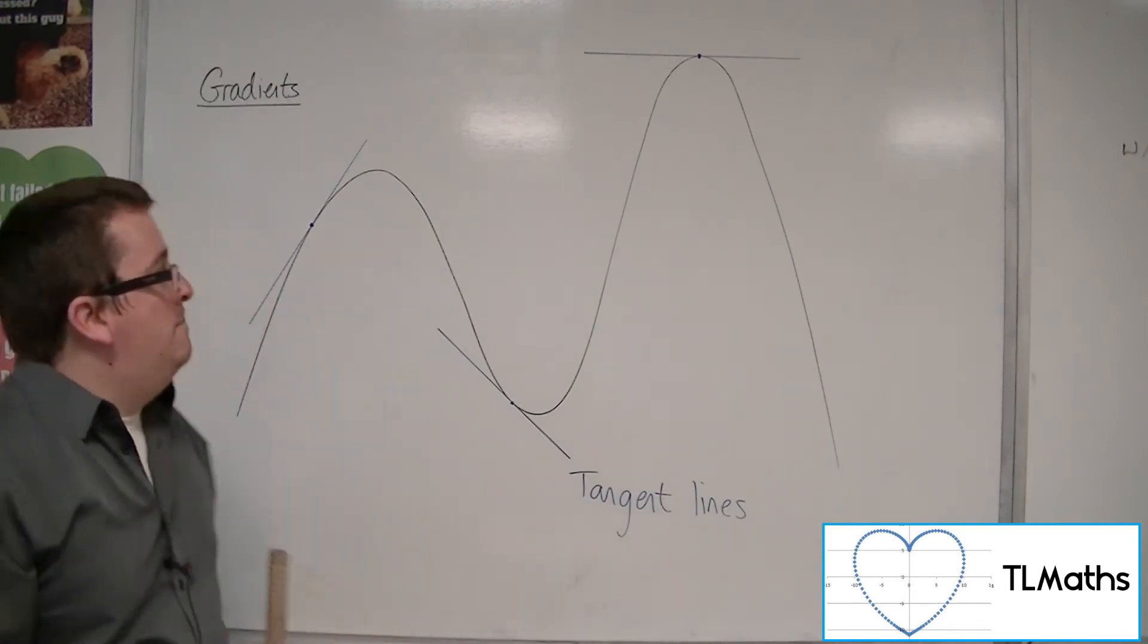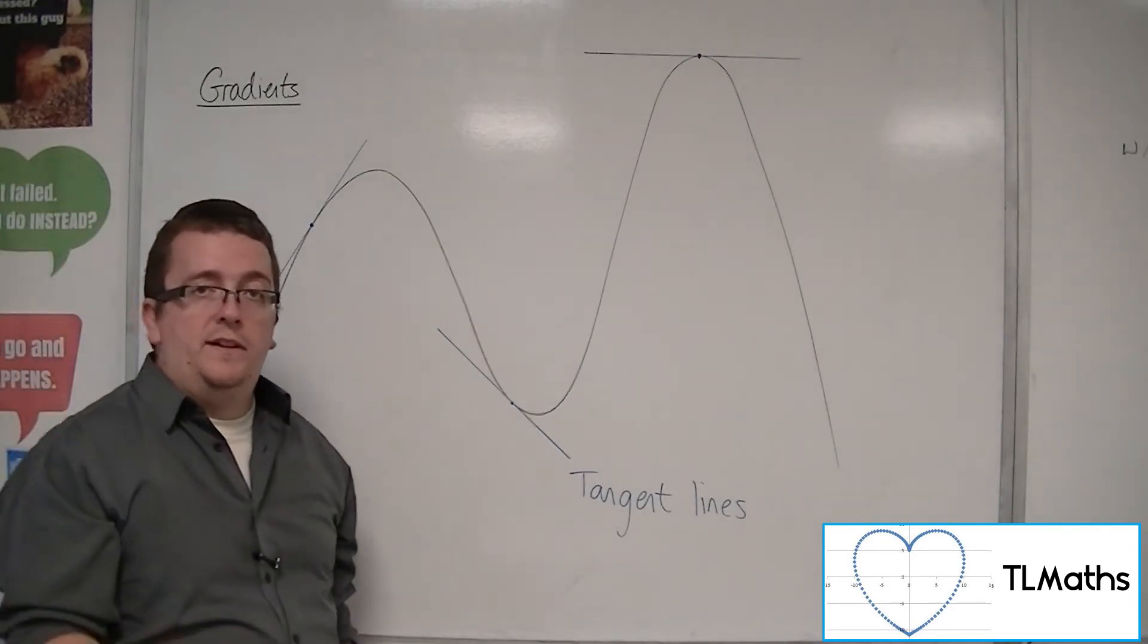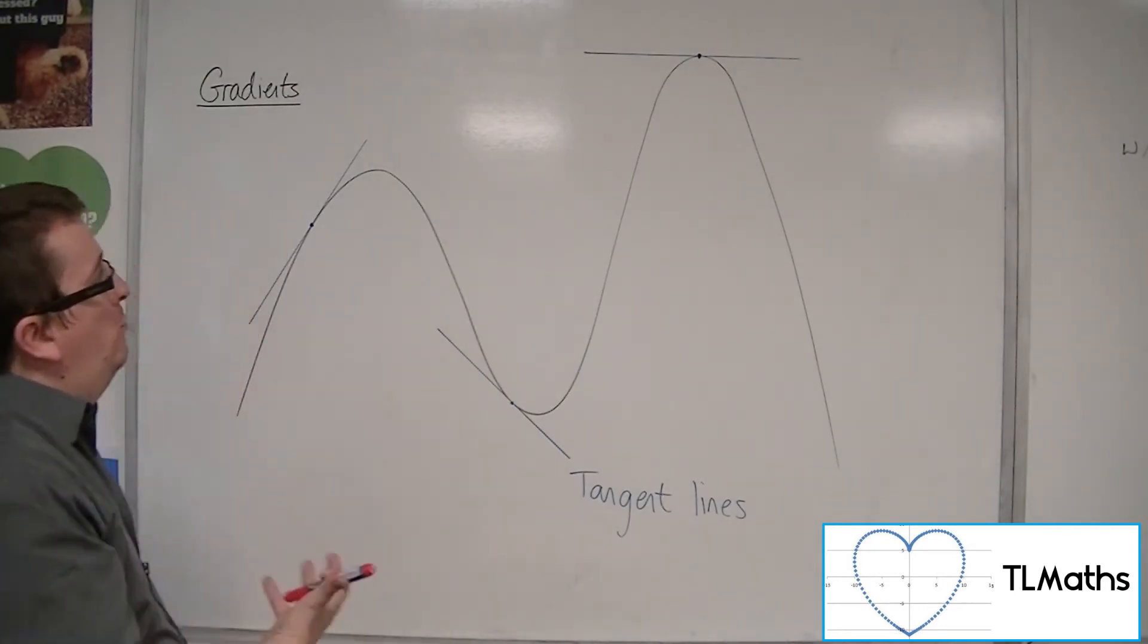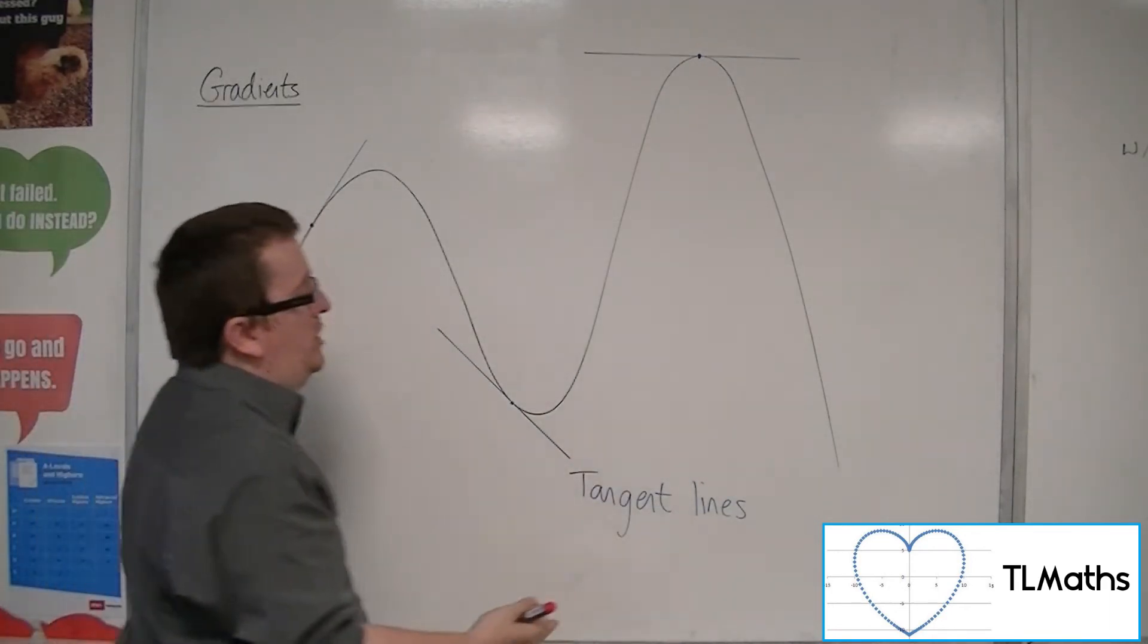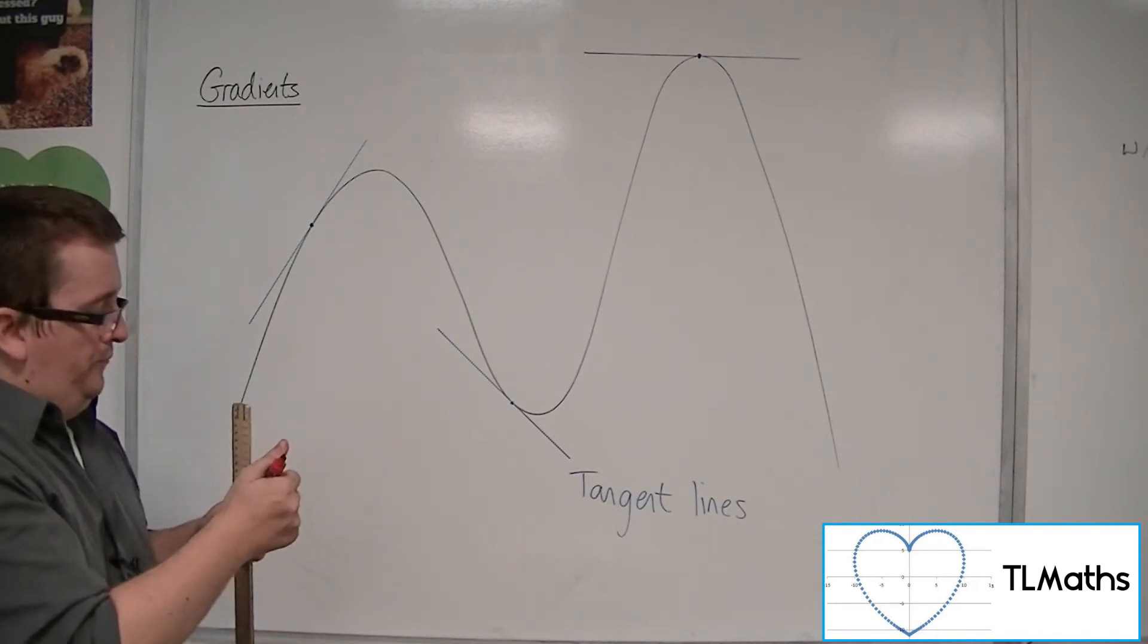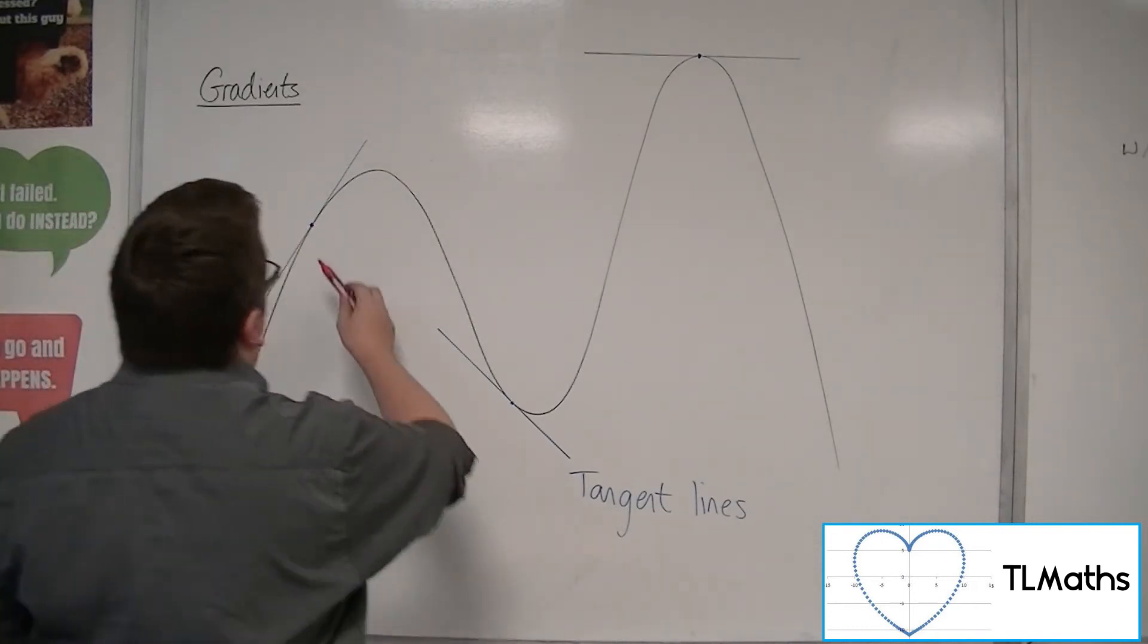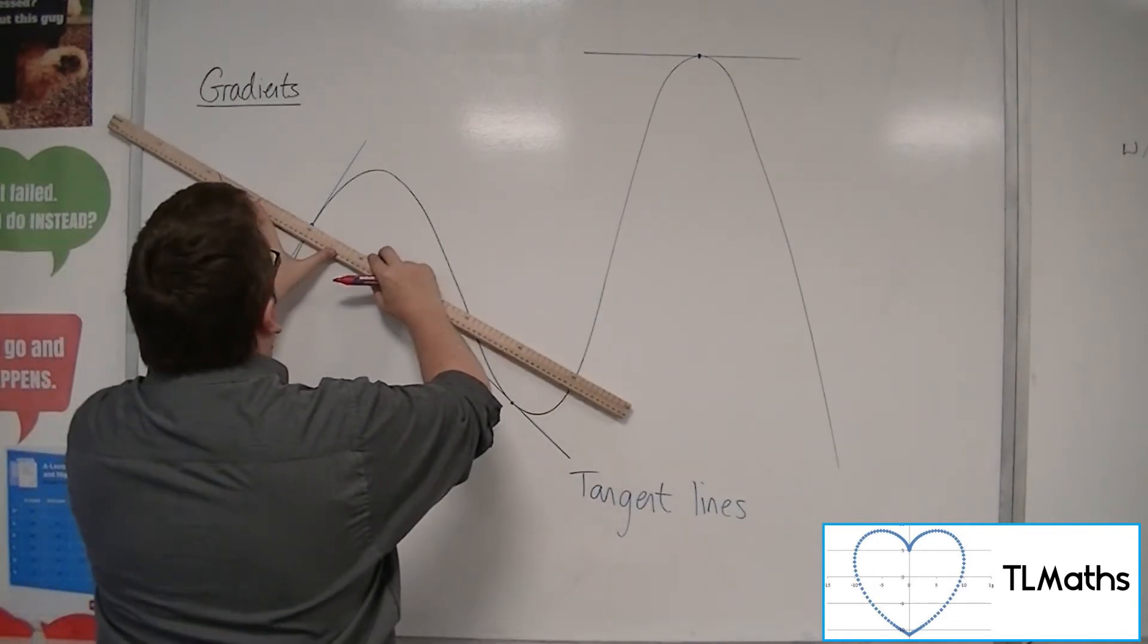Now, it may well be that we also want to find something called a normal to the curve. Now, a normal to the curve sits where the tangent line is, but at right angles to it. So the normal to the curve at that point is the line that is at right angles to the tangent line.